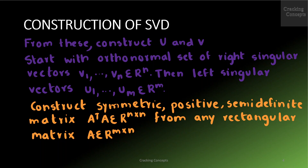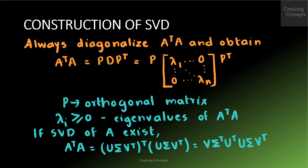Let us begin with constructing the right singular vectors. The spectral theorem tells us that a symmetric matrix possesses an orthonormal basis of eigenvectors, which also means it can be diagonalized. We can always construct a symmetric positive semi-definite matrix A^T A belonging to N×N from any rectangular matrix A in M×N. Thus we can always diagonalize A^T A and obtain A^T A = P D P^T, where D has diagonal elements as eigenvalues and zeros elsewhere, P is an orthogonal matrix composed of the orthonormal eigenbasis, and the λi ≥ 0 are the eigenvalues of A^T A.